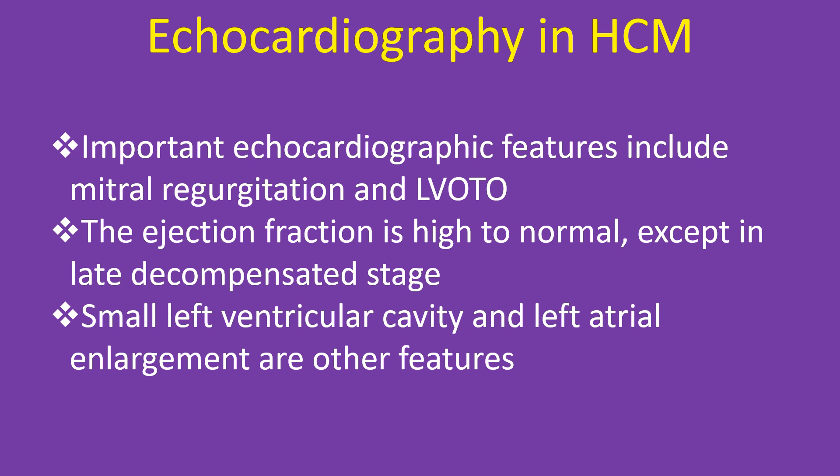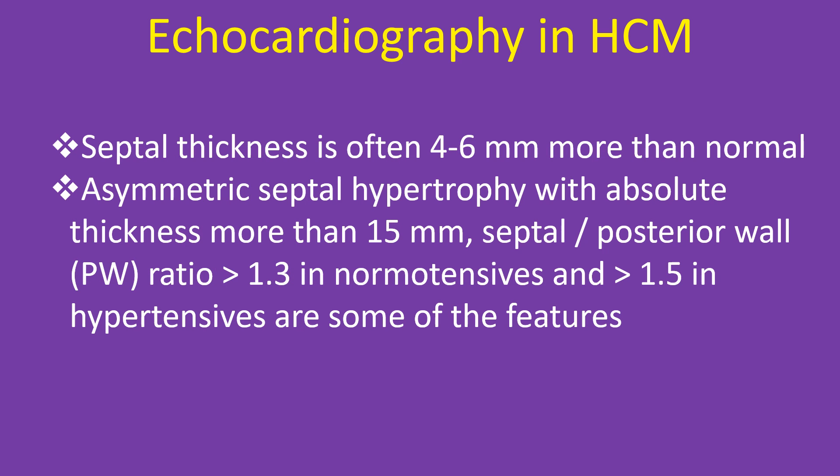Echocardiography in HCM: Important echocardiographic features include mitral regurgitation and left ventricular outflow tract obstruction. The ejection fraction is high to normal except in the late decompensated stage. Small left ventricular cavity and left atrial enlargement are other features. Septal thickness is often 4 to 6 mm more than normal. Asymmetric septal hypertrophy with absolute thickness more than 15 mm, and a septal-to-posterior wall ratio more than 1.3 in normotensives and more than 1.5 in hypertensives are diagnostic features.